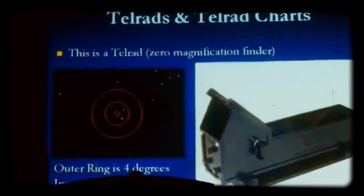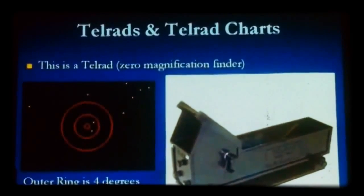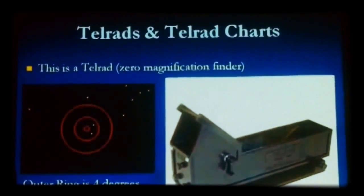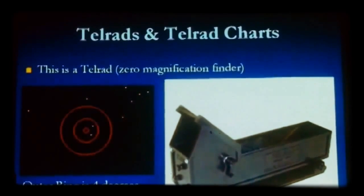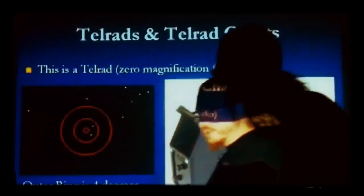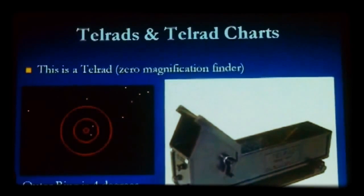Eric started with his finder scope aligned to his optical tube. During the day, I pick an object as far away as possible — like the top of a water tower at least a mile away — make sure it's centered in the main optical tube, then adjust the finder scope screws until the crosshairs are also on that point. One of the biggest complaints from beginners is that they can't find anything through their telescope even with their finder — it's because the finder isn't aligned. The same is true with a Telrad.